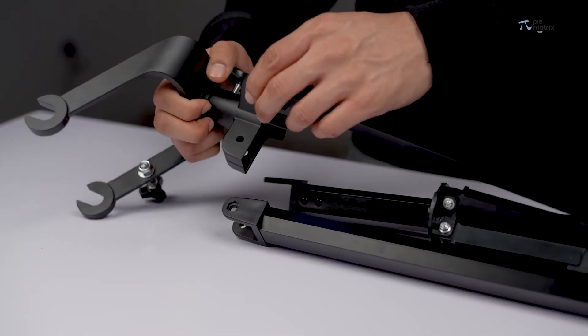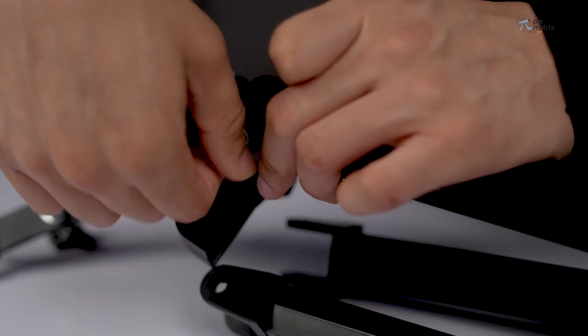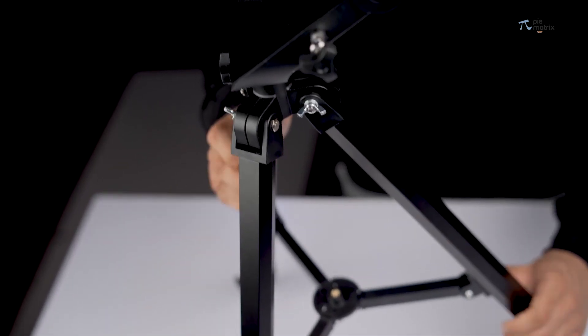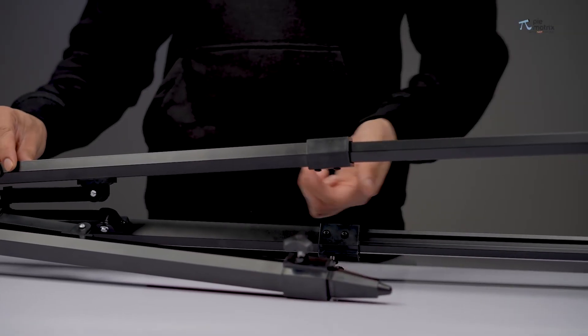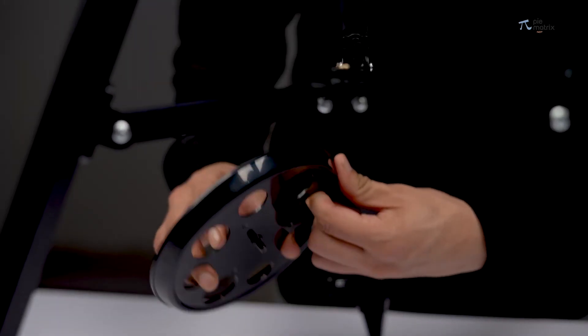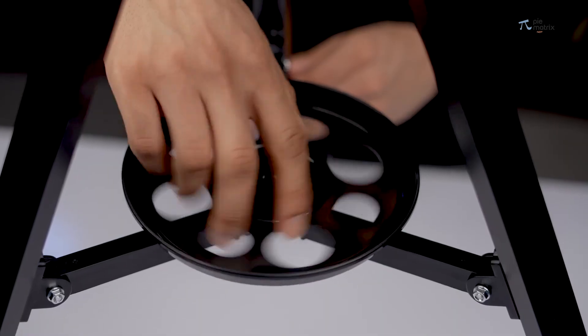Now install the mount using butterfly screws as shown in the video. The height of the tripod can easily be adjusted using separate knobs. Lastly place the accessory tray between the tripod legs and fix it so that the tripod stays in place.